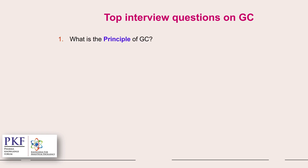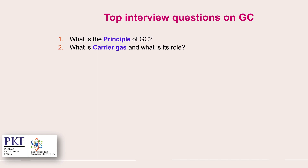Top interview questions on GC. What is the principle of GC? GC is a separation technique which is based on solid or liquid stationary phase and gas as a mobile phase. It is used for separation of organic volatile components. During separation, different components are interacting with different capacity and they are getting separated.